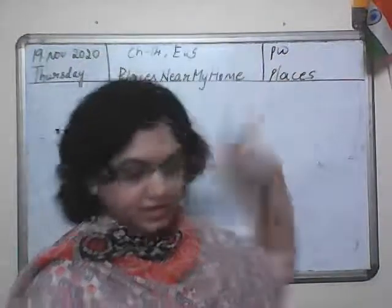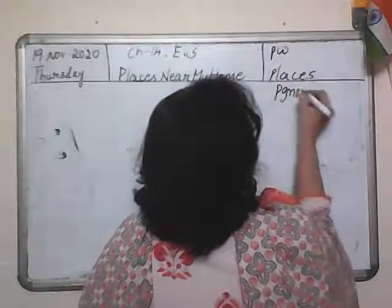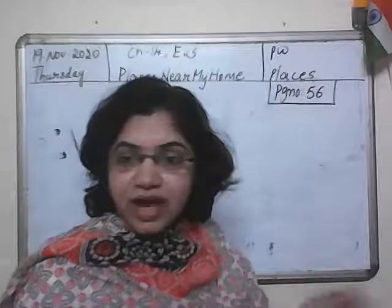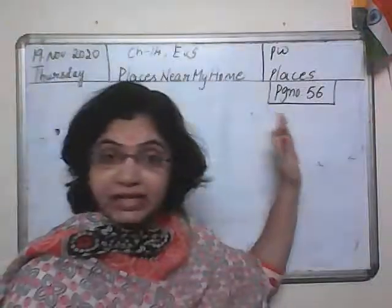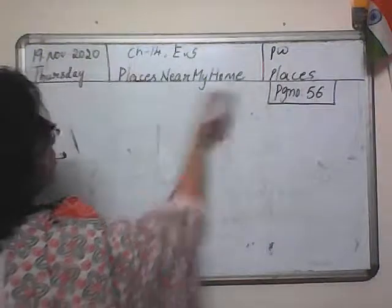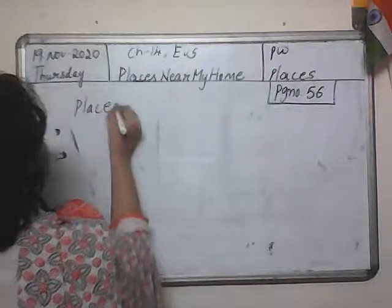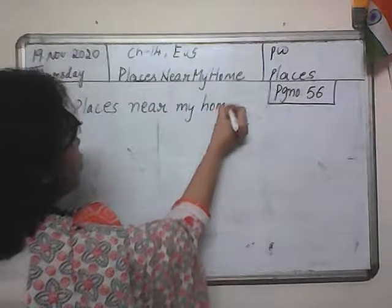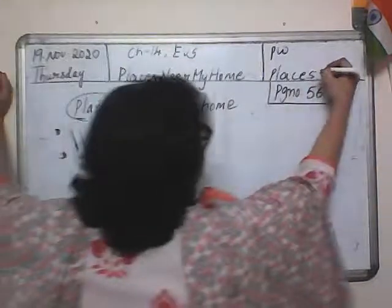Today's password is 'places.' Let me tell you the page number — page number 56 in your EVS textbook. The chapter is called Places Near My Home. P-L-A-C-E-S, places. N-E-A-R, near. M-Y H-O-M-E, my home. Because the word 'places' is in today's chapter, I have taken the password as 'places.'